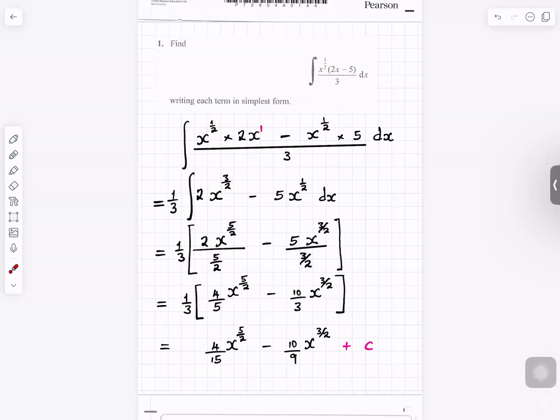And you take 1 over 3 to the outside of the integral sign. And this one becomes 5x to the half. When you integrate, add 1 to the power. 3 over 2 plus 1 gives you 5 over 2, and you divide by 5 over 2, you divide by the power.